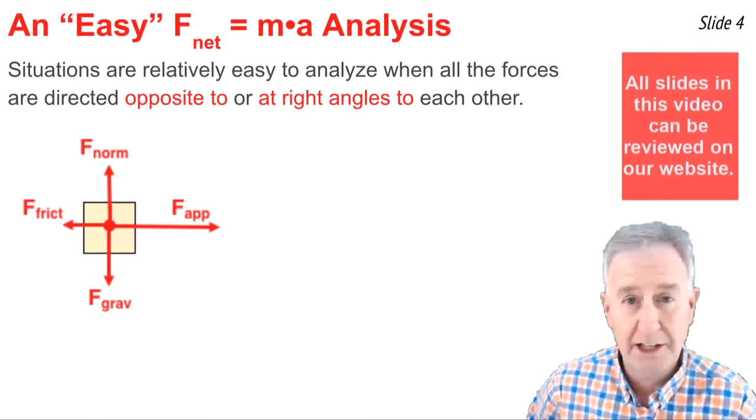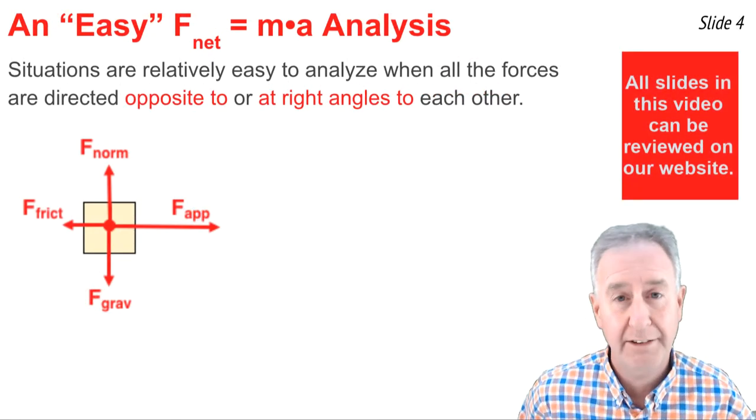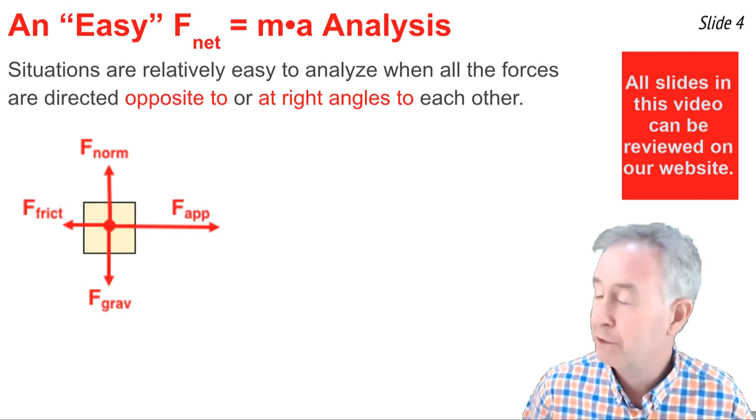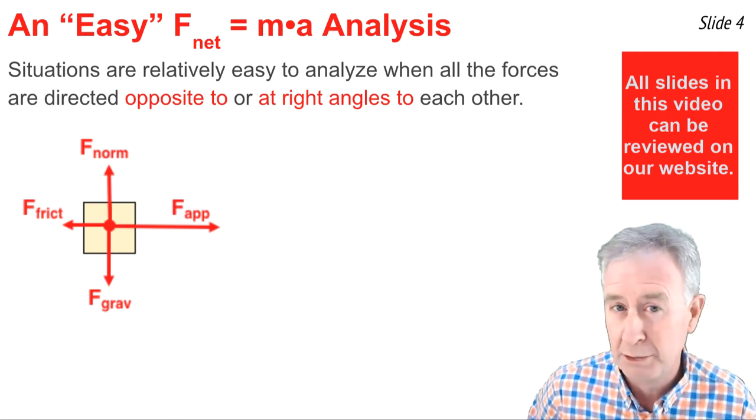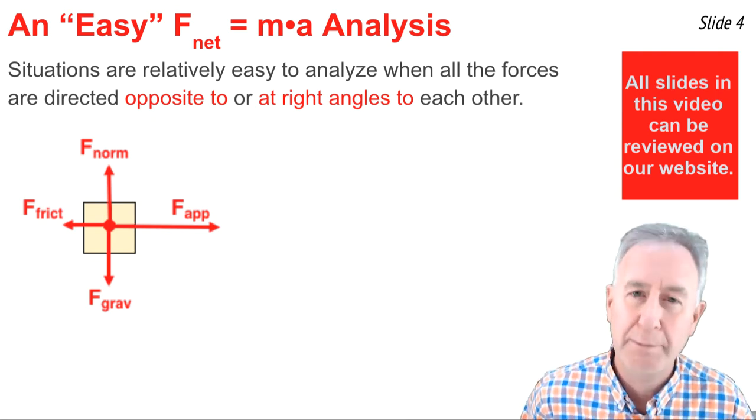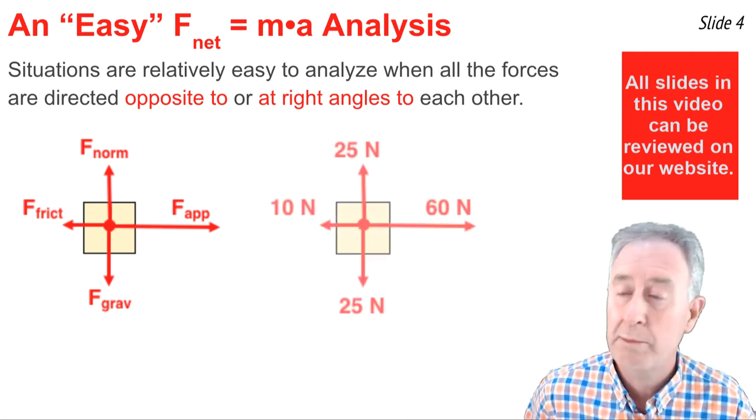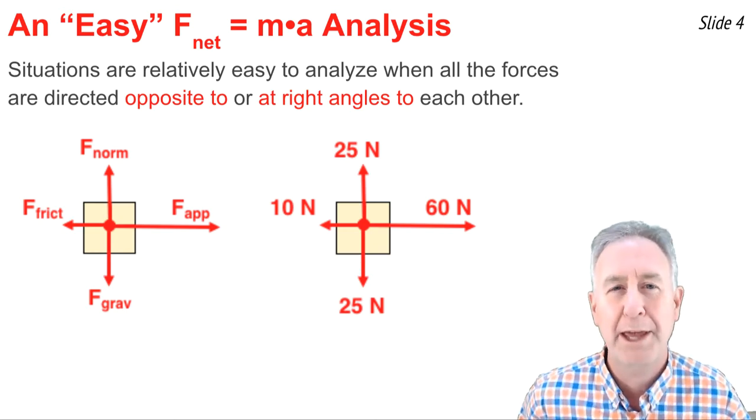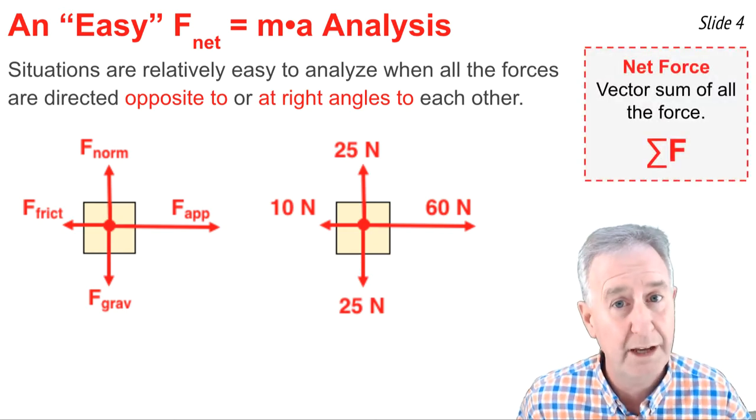When I see a diagram like this, I'm prepared for an easy F net equals m·a analysis. What makes it easy is that all the individual forces are either opposite to one another or at right angles to one another. If we were to put some numbers in place of the symbols, we might have a diagram that looks like this. And in a typical F net equals m·a analysis, we have to find out what the net force is.